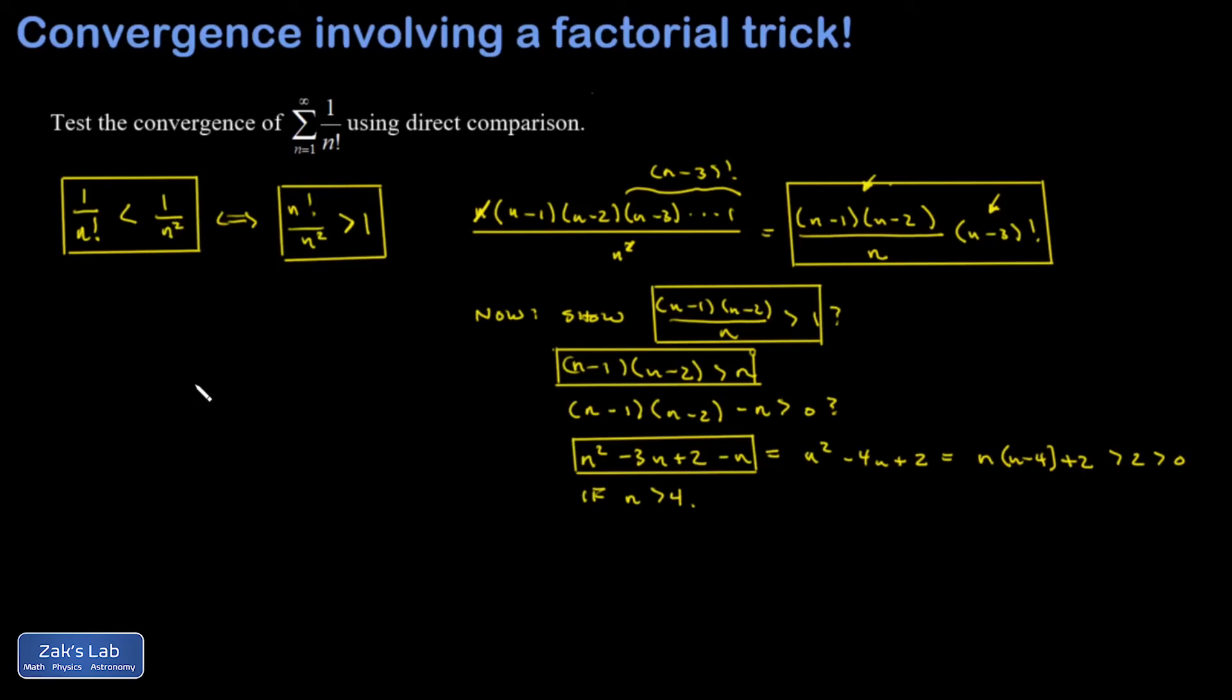To complete the argument about the convergence of the series, I would say now that I know 1 over n factorial is less than 1 over n squared. And I know that 1 over n squared series converges because that's a p series with p equals 2.